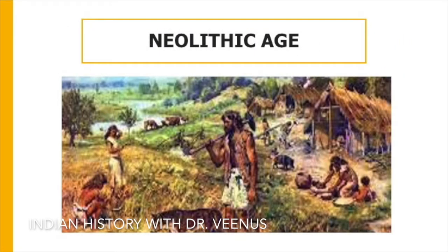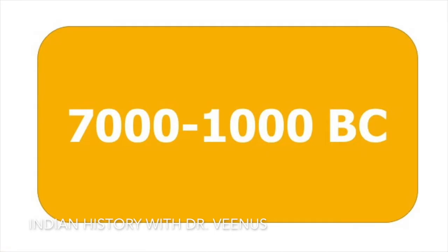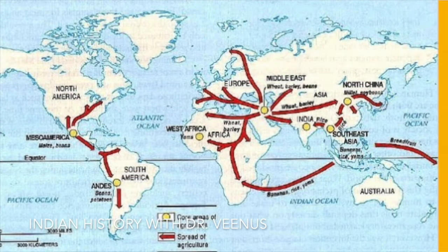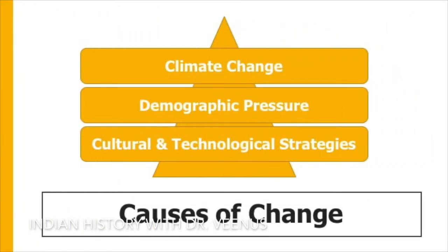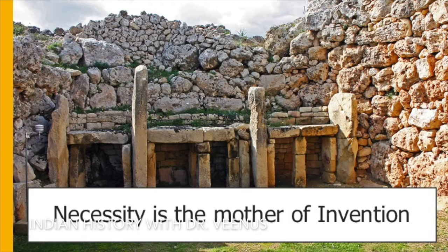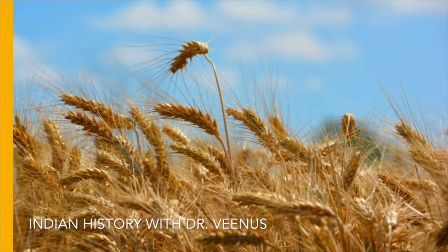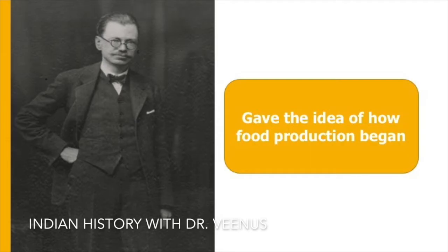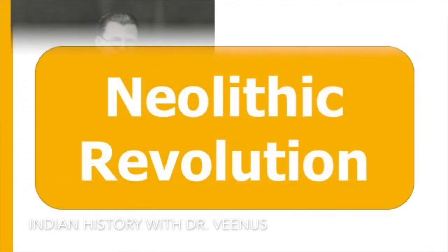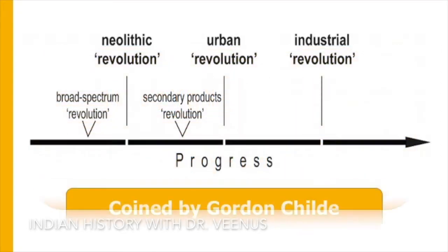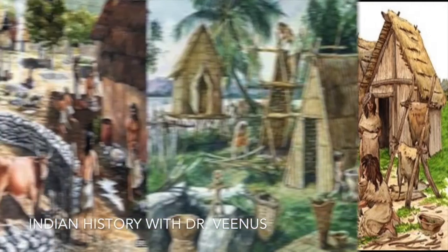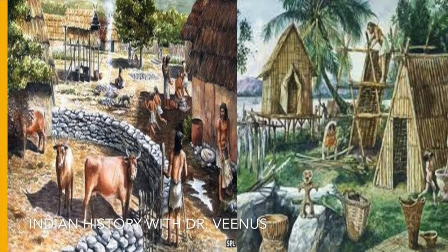The Neolithic, or New Stone Age, from 7000 to 1000 BC, saw the advent of food production, agriculture and animal husbandry independently in different parts of the world. It is believed that a combination of climate change, demographic pressure and different cultural and technological strategies triggered this massive change. The term Neolithic Revolution was coined by Gordon Childe to emphasize the progress that happened during the Neolithic period — the progress from a hunting-gathering to a food-producing economy and the consequent growth of farming communities and settled village life.